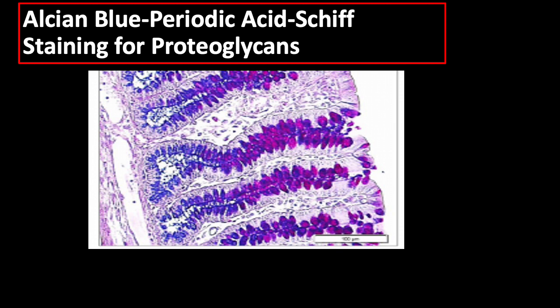Next is alcian blue periodic acid Schiff (PAS) staining for proteoglycans. This combined method utilizes properties of both the PAS and alcian blue methods to demonstrate the full complement of tissue proteoglycans. By first staining all acidic mucins with alcian blue, those remaining acidic mucins which are also PAS positive will be chemically blocked and will not react further, while neutral mucins which are solely PAS positive will subsequently be demonstrated in a contrasting manner.